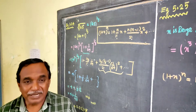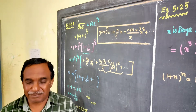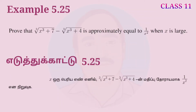Welcome to Example 5.25. How do you show that the cube root of (x³ + 7) minus the cube root of (x³ + 4) is approximately equal to 1 by x², when x is large? That would be: cube root of (x³ + 7) minus cube root of (x³ + 4) is equal to 1 by 4.